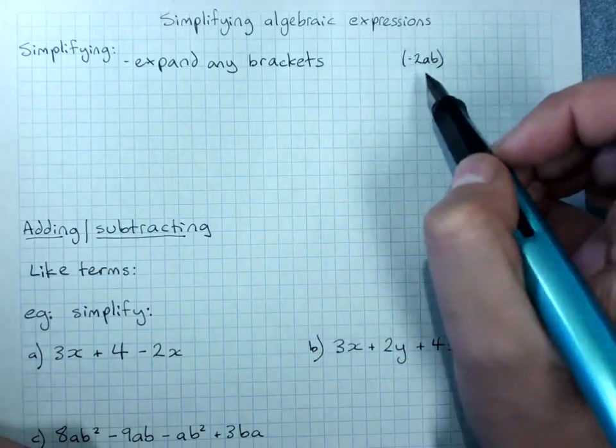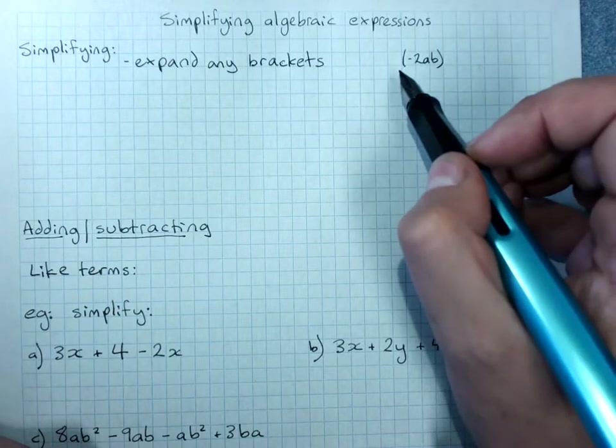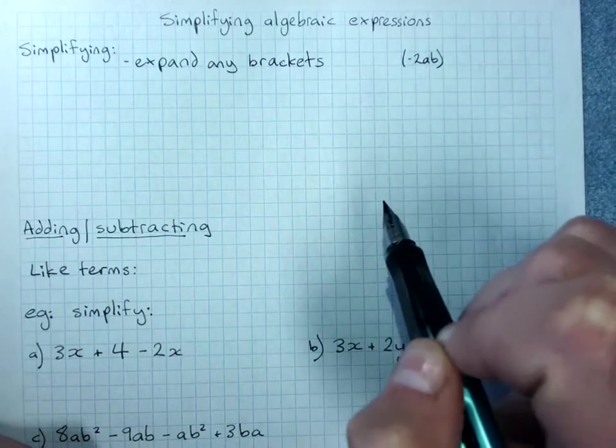But if you don't see a sum to be done or something outside the brackets like a power or a coefficient, then it's usually just saying hey this negative belongs here.